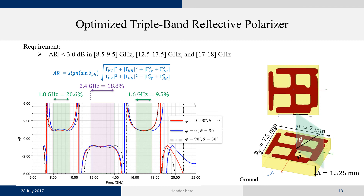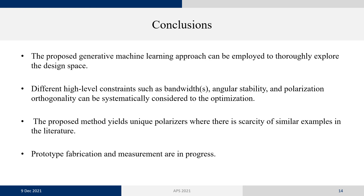In conclusion, the proposed generative machine learning approach can be employed to thoroughly explore the design space for this challenging problem. We were able to systematically include high-level constraints such as bandwidth, angular stability, and polarization orthogonality. The method yields unique polarizers where similar examples are scarce in the literature. Prototype fabrication and measurements are currently in progress. Thank you so much for watching this presentation.